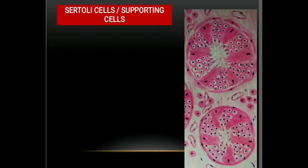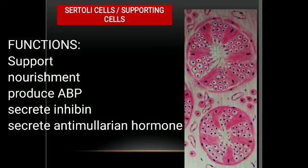Let us learn in detail about each variety of cells. The first are the supporting cells, also called Sertoli cells. These are very tall columnar cells extending from very close to the basal lamina towards the lumen of the seminiferous tubule.